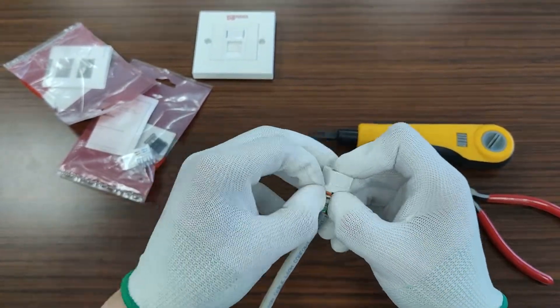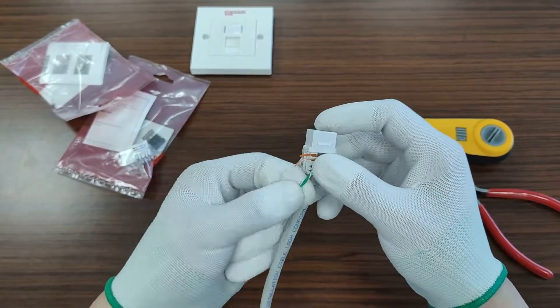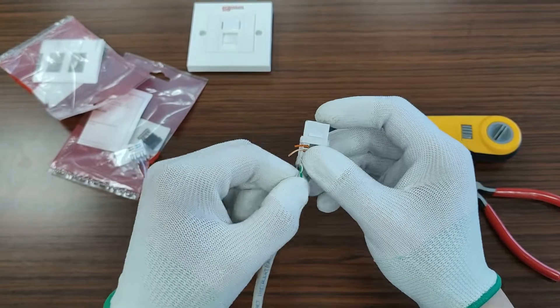Placing the keystone jack on the fixture and setting the wire pairs on the IDC according to the wiring configuration A or B.